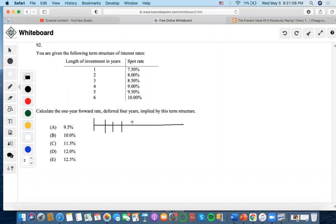One, two, three, four. Four years are deferred and we calculate one year forward. So we need to find F45, the rate from four to five, right? So it says implied by this term structure.